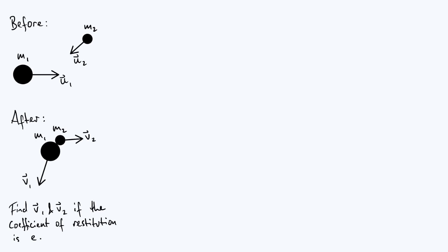The key parameters of the problem are illustrated on the diagram. The two spheres have masses m1 and m2, and before they collide they're moving with initial velocities u1 and u2. It's a non-head-on collision in general, so u1 and u2 are going in arbitrary directions. After the collision their velocities have changed to v1 and v2, and we want to find v1 and v2 in terms of m1, m2, u1, u2, and the coefficient of restitution e.